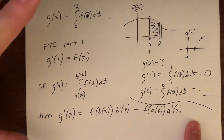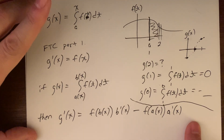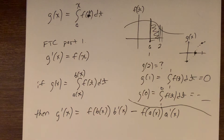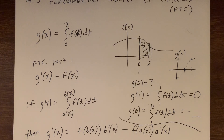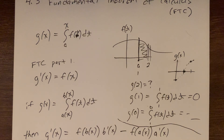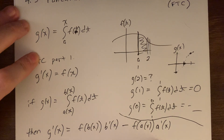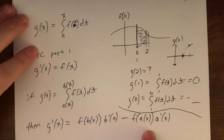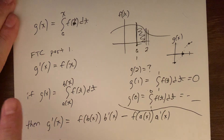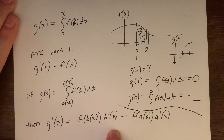This really seemed like a big detour, but this idea helps. Technically, FTC Part 1 is used to prove FTC Part 2, and Part 2 is really the big thing we're going to use. So here is FTC Part 1: if you have this integral, then this is its derivative. Let's immediately take advantage and find some derivatives.